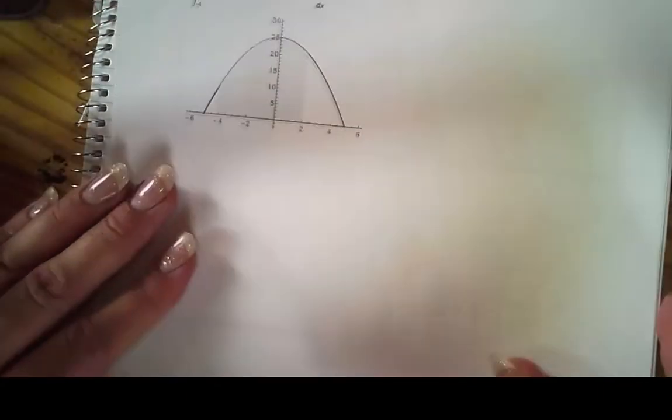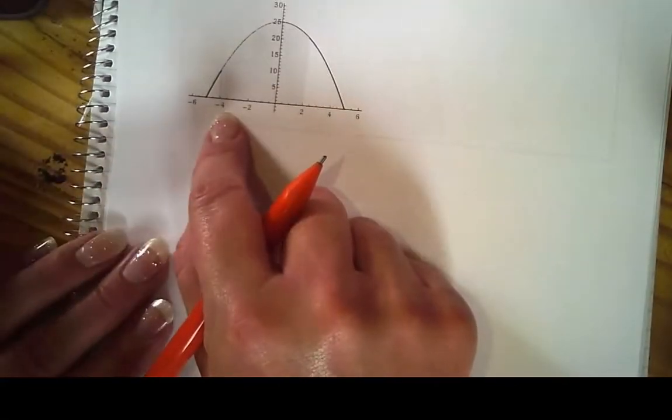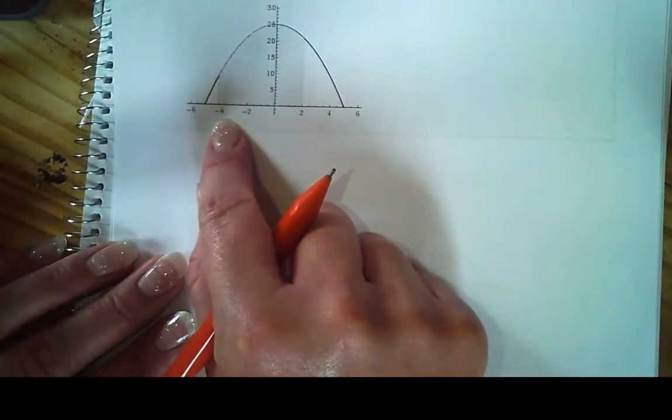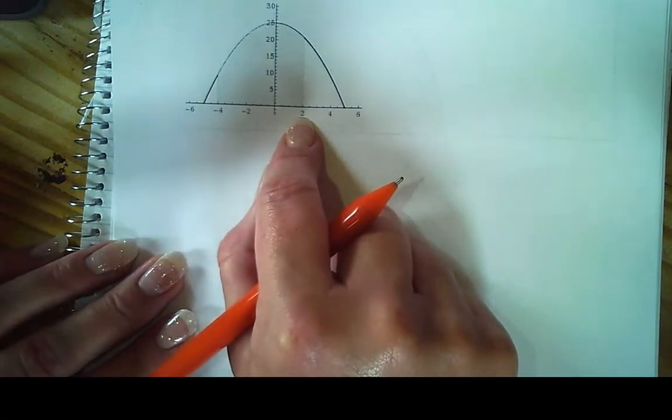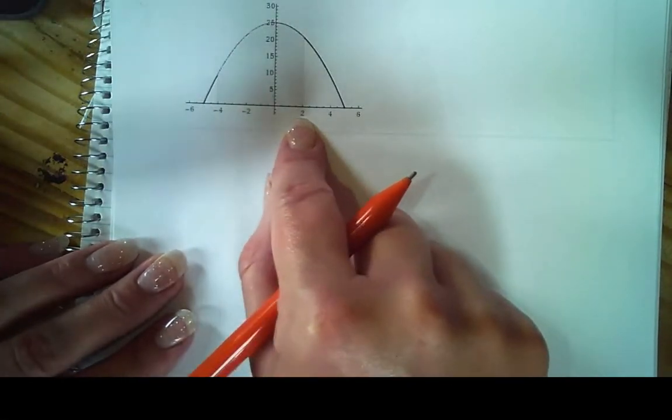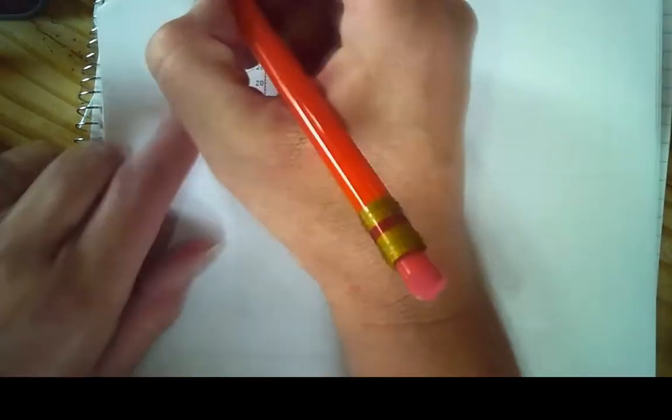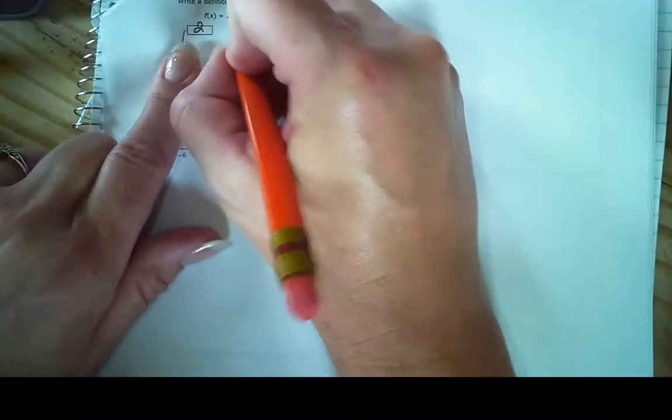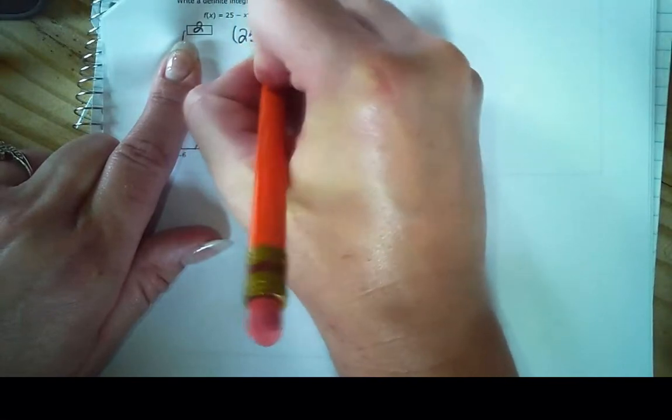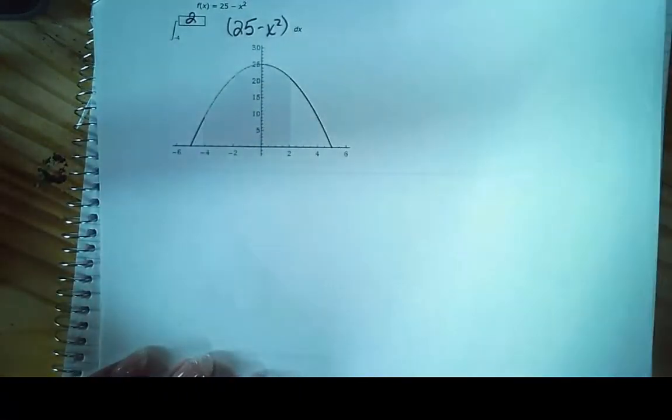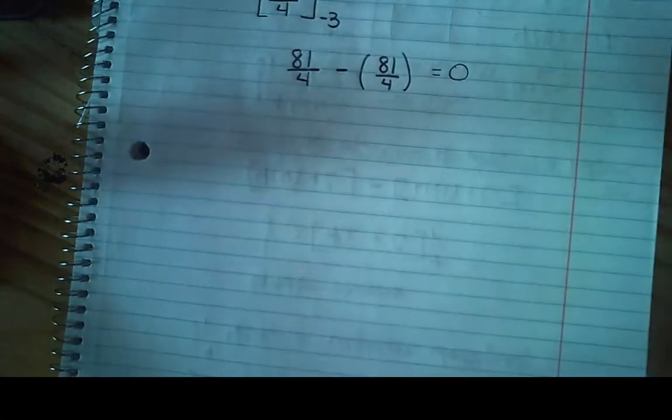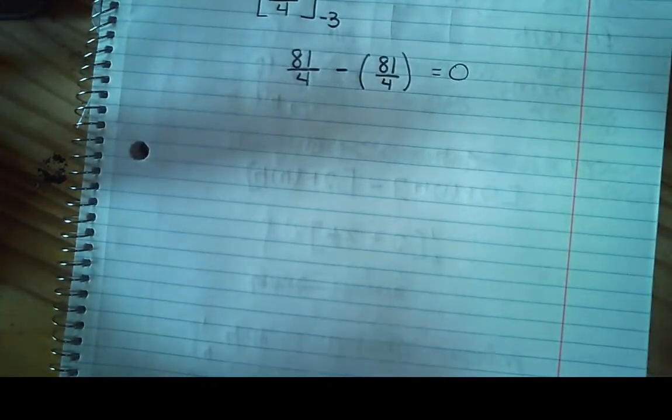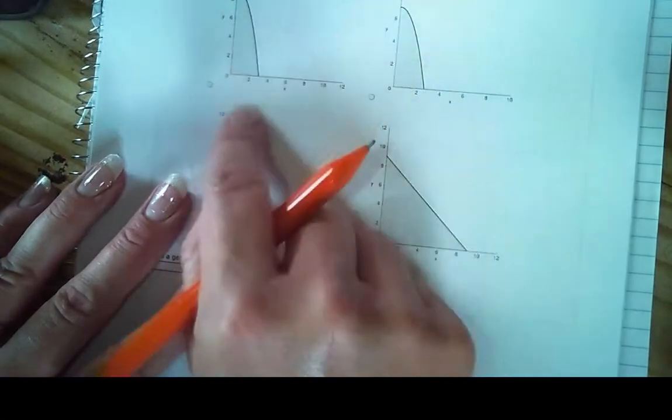All right, so let's set this one up. Where am I going from to? I'm going to go from negative 4 to positive 2. And so here's my negative 4. Here's my positive 2. And then what's my function? My function is 25 minus x squared. So we're just practicing right now.